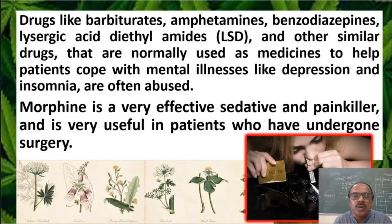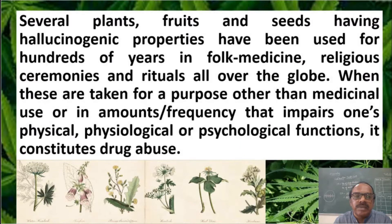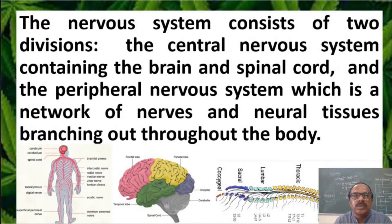Morphine is a very effective sedative and painkiller, but unfortunately it is misused and abused. It is generally used for patients who have undergone surgery. Several plants, fruits, and seeds having hallucinogenic properties have been used for hundreds of years in India and across the globe for various medicinal purposes, but now they are abused. The nervous system is made up of the central nervous system and peripheral nervous system. The CNS is made up of the brain and spinal cord, while the peripheral nervous system is a network of nerves and neural tissues branching throughout the body.